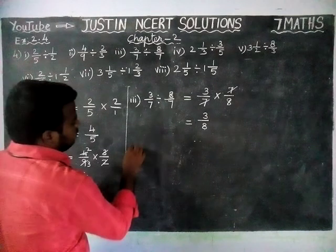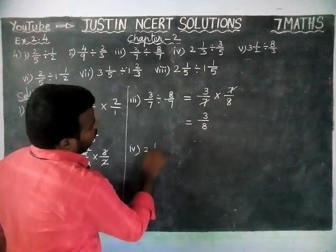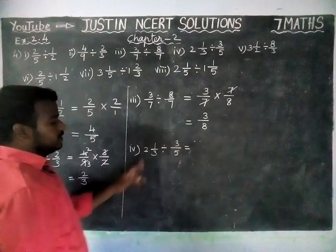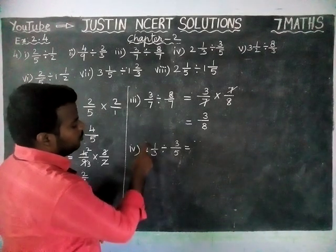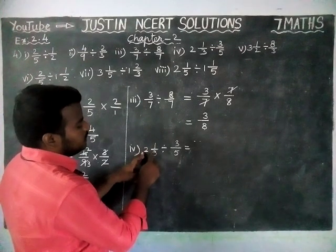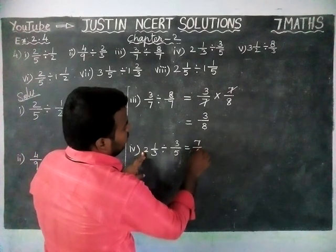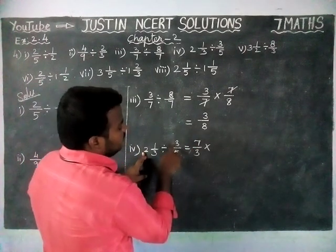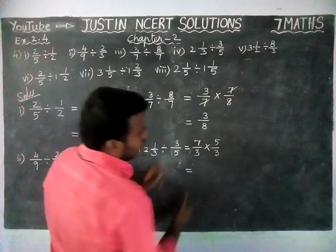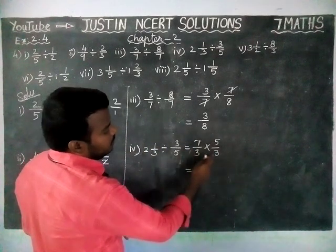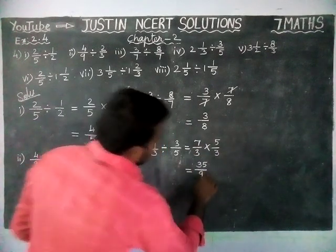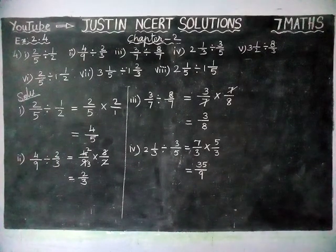Fourth question: 2⅓ divide 3/5 is equal to — this is a mixed fraction, so we have to convert into improper. Whole part into denominator plus numerator: 2 times 3 is 6, 6 plus 1 is equal to 7. So, 7/3 divide 3/5 — the reciprocal of 3/5 is 5/3. Multiplying numerator into numerator, denominator into denominator: 7 times 5 is 35, divided by 3 times 3 is 9. So, the answer for the fourth question is equal to 35/9.